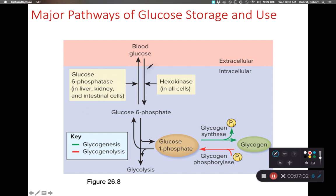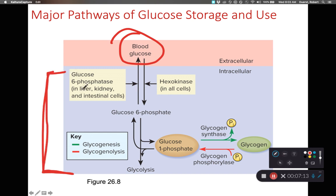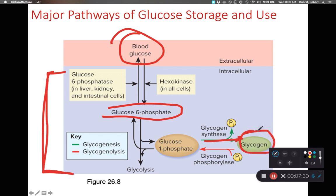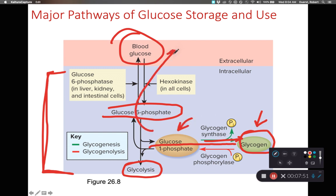Here we can have blood glucose, which is outside the cells of our bodies. This large purple block represents a liver cell. When glucose gets into our liver, we turn it into glucose-6-phosphate (G6P). That G6P can either be turned into glycogen if we have too much glucose, or if we don't have enough glucose, that glycogen can be turned back into glucose and fed into glycolysis, or turned back into an intermediate species and dumped back into the bloodstream.